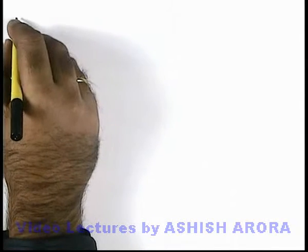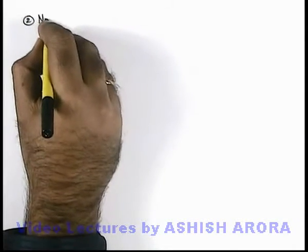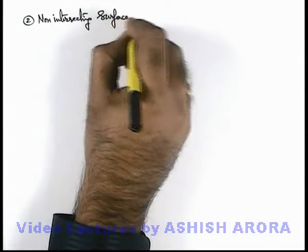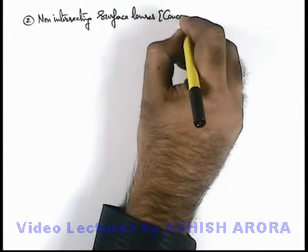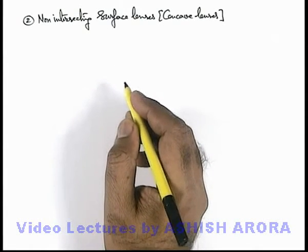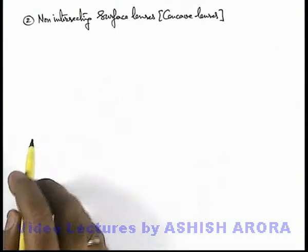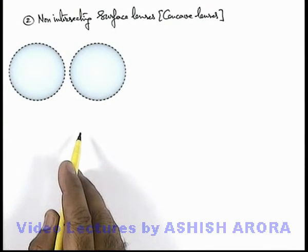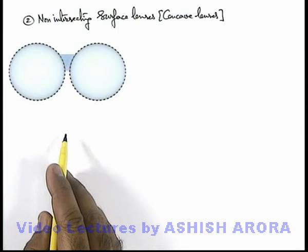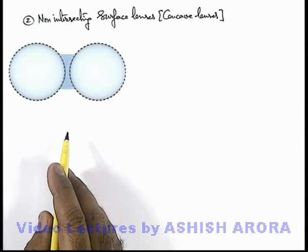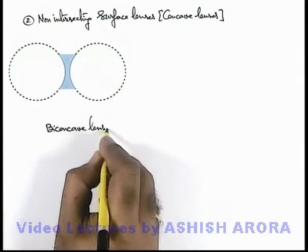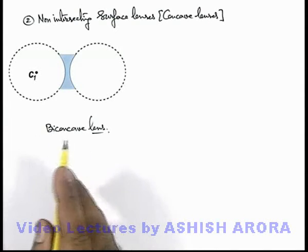The 2nd type of lens is called non-intersecting surface lenses, which are also called concave lenses. These are the lenses in which the 2 surfaces bounding the region forming the lens do not intersect each other. If there are 2 spherical surfaces which are non-intersecting and the region between the 2 surfaces is filled with a transparent media, then this type of lens we term as a bi-concave lens. The center of curvature of the 2 surfaces lie on the opposite sides of the lens.